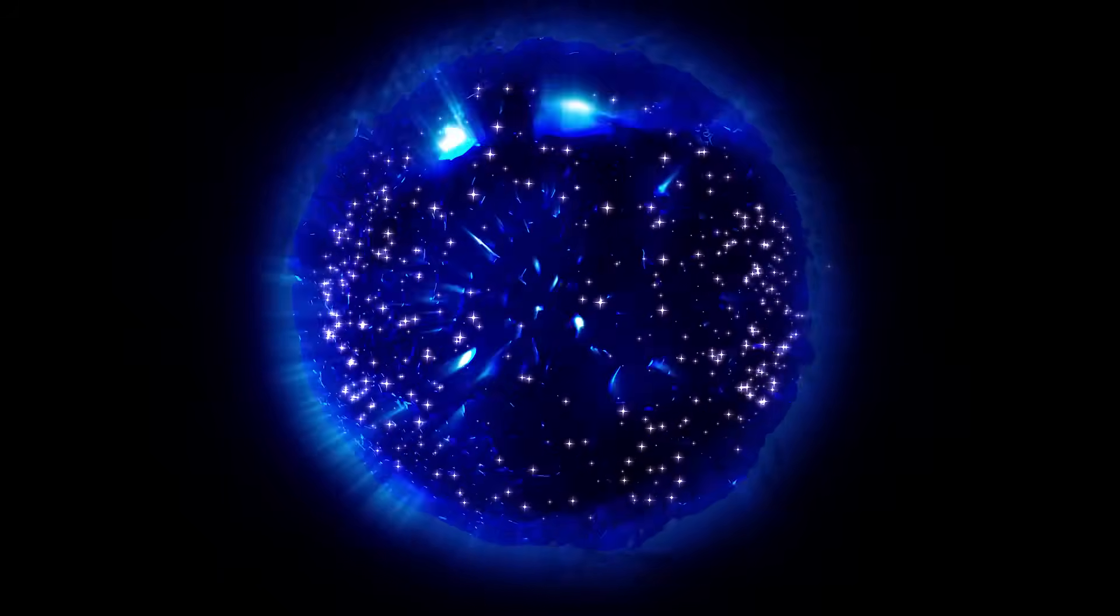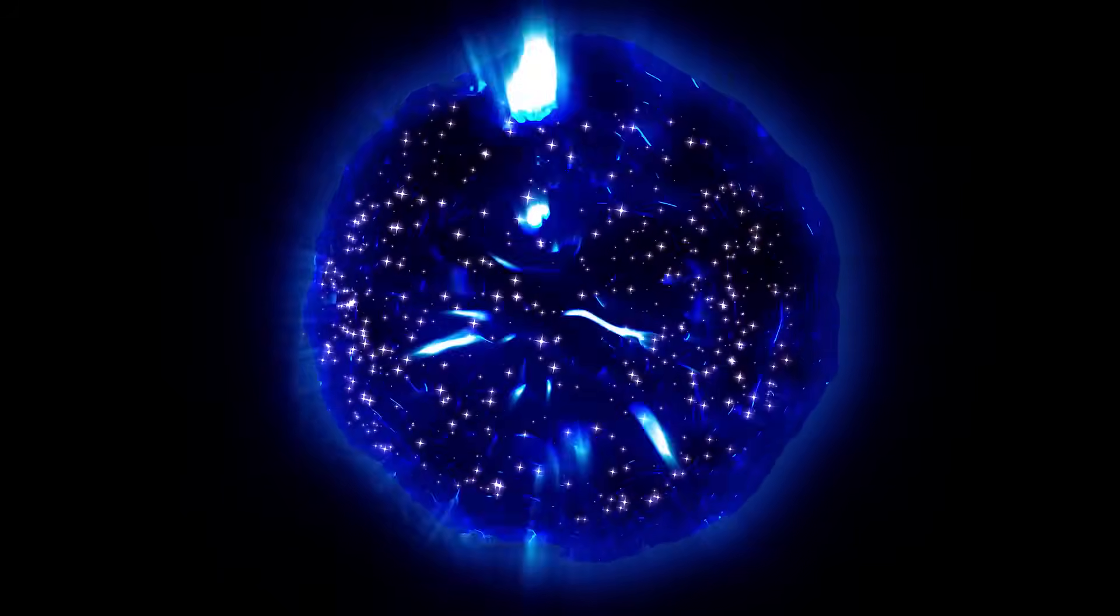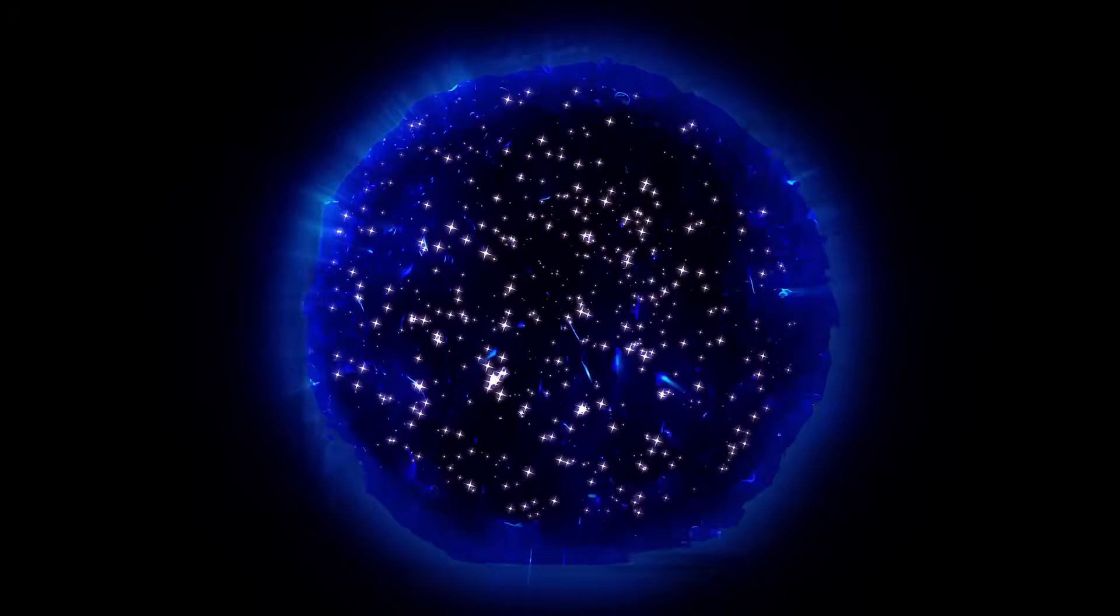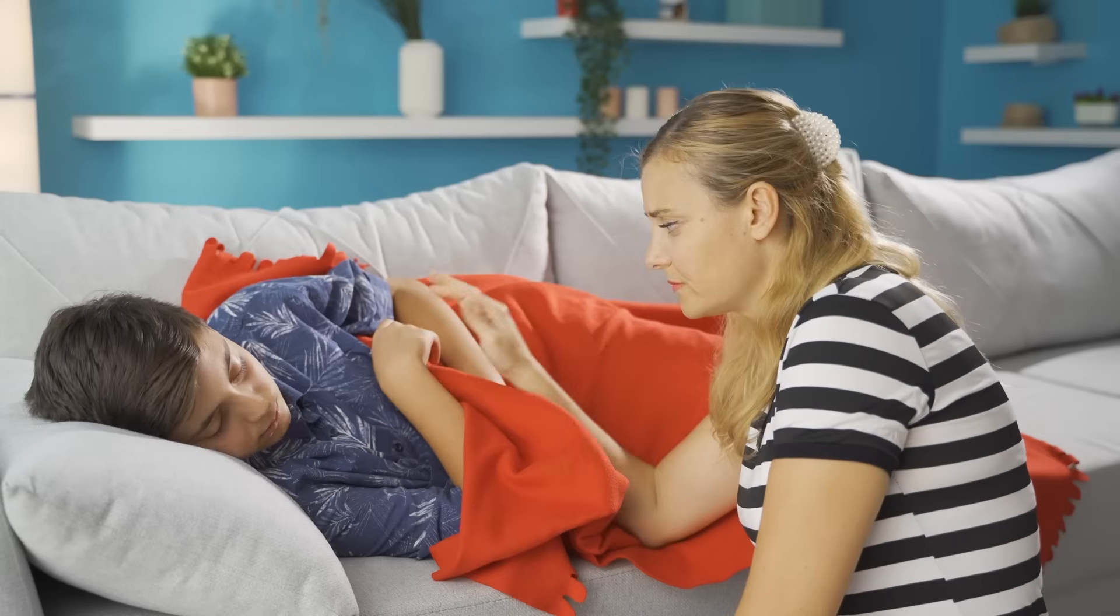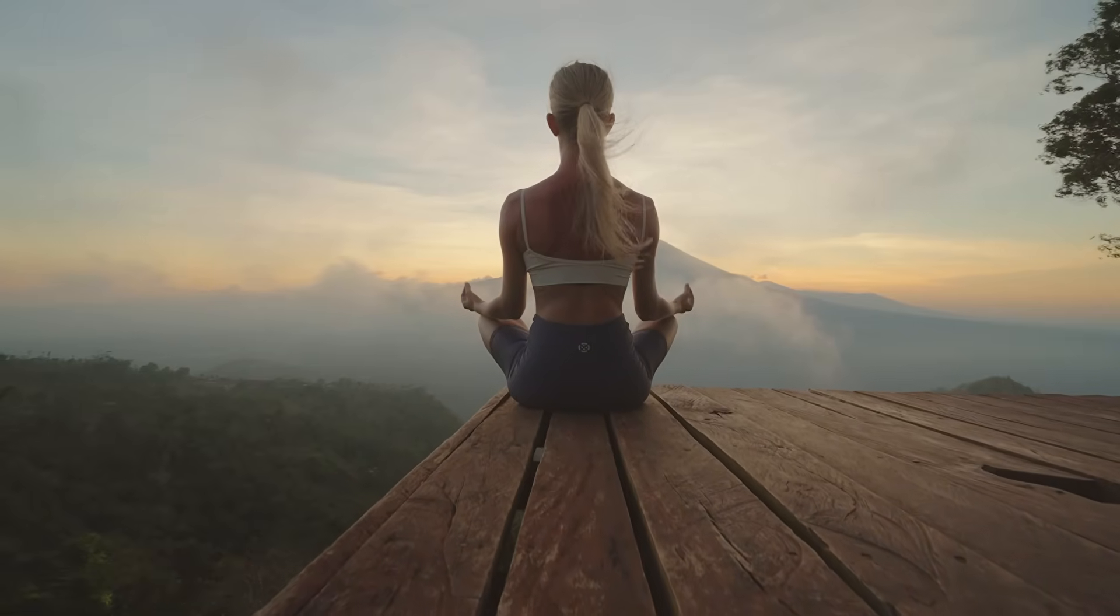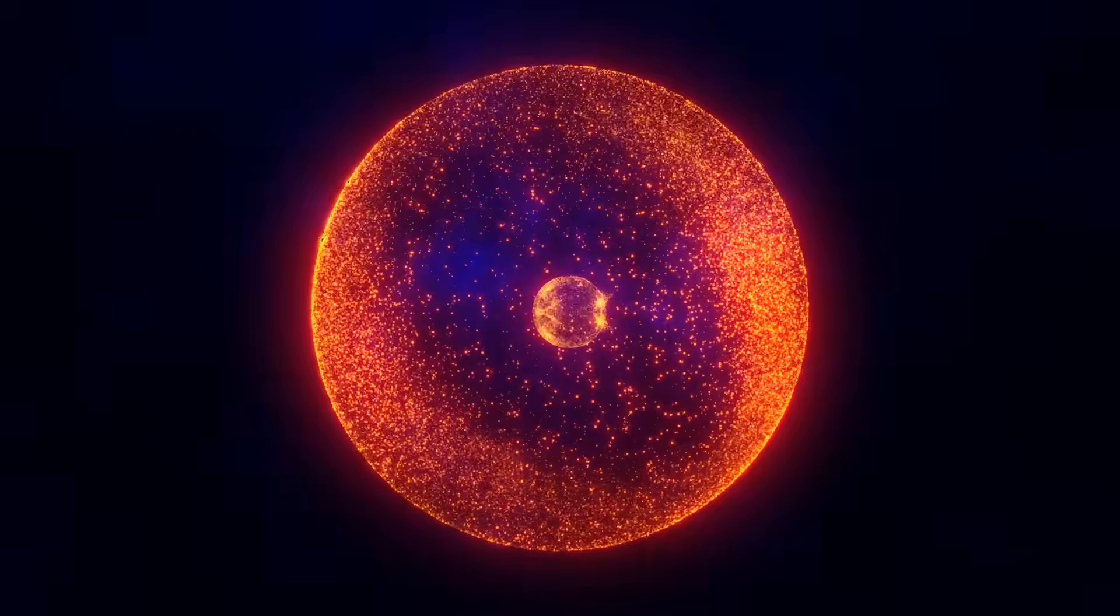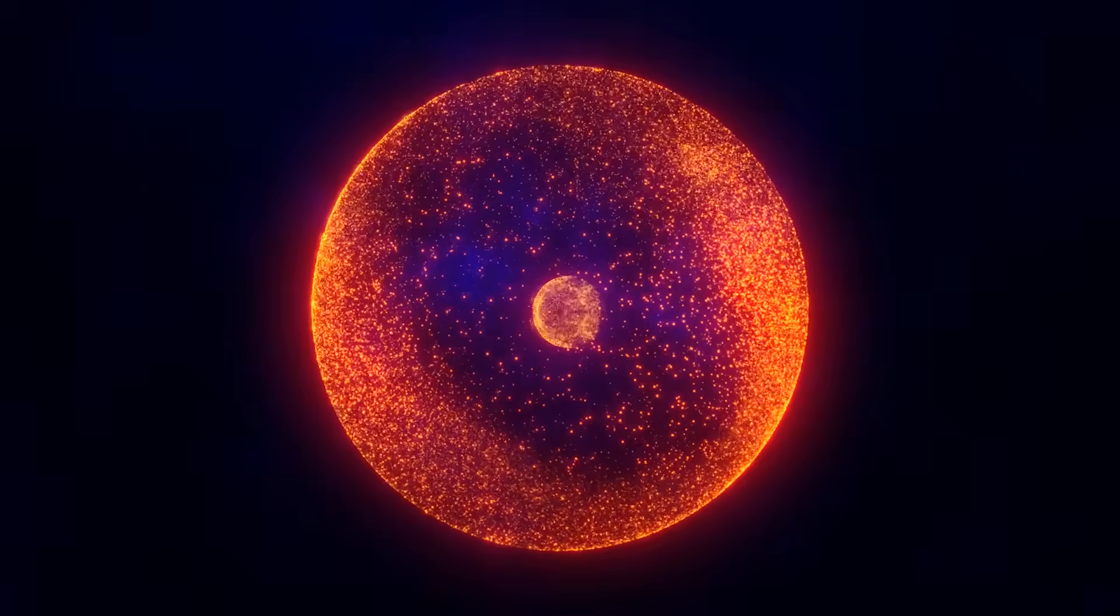The intensity of this cellular light show directly correlates with how hard your cells are working. During periods of high metabolic activity, your cells produce more ROS, which means more photon emissions. It's like having a biological dimmer switch that responds to your body's energy demands. When you're exercising, stressed, or fighting off an infection, your UPE levels spike dramatically. Conversely, during rest or meditation, the emissions dial down to a gentle glow.